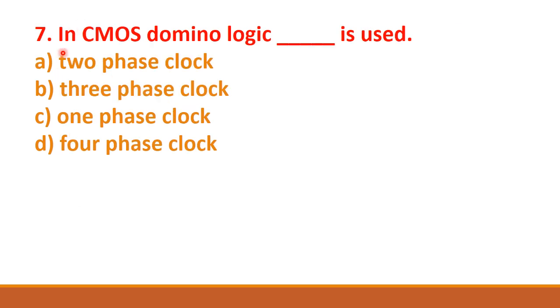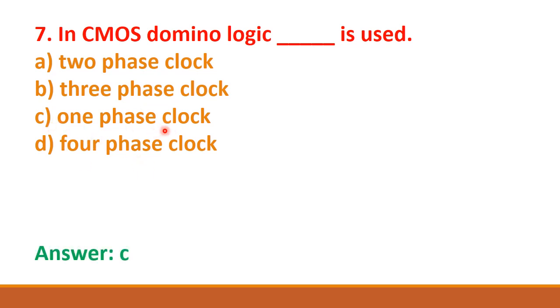Next question: in CMOS domino logic, dash is used — two phase clock, three phase clock, one phase clock, and four phase clock. The correct answer is option C: one phase clock.